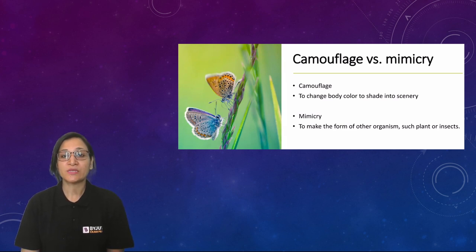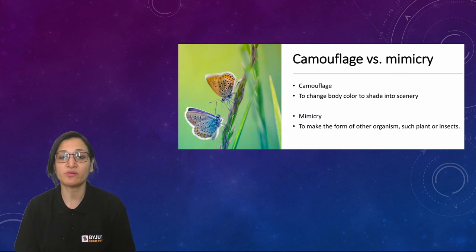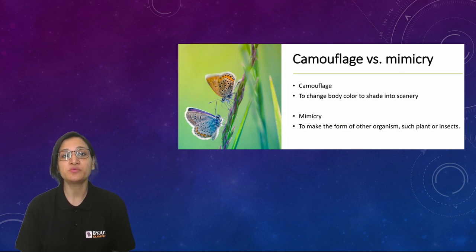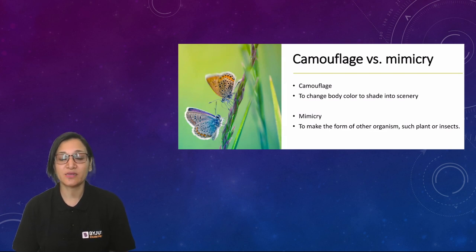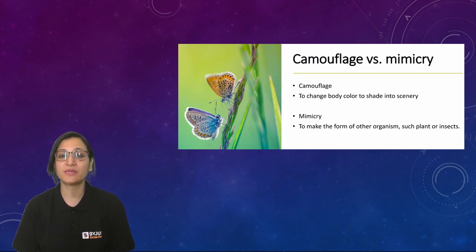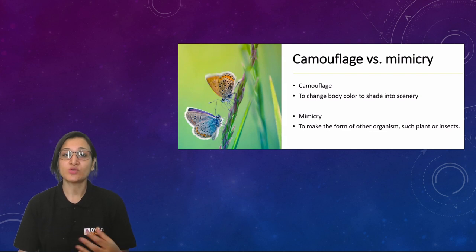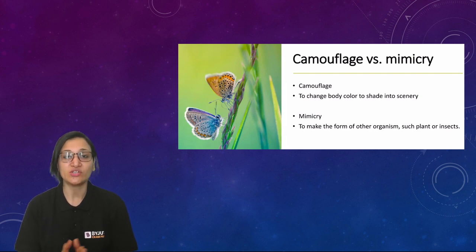So I hope it is very much clear what camouflage and mimicry are. Mimicry is usually exhibited by plants, insects, and reptiles. Higher vertebrates can also show mimicry. So I hope this is very much clear.